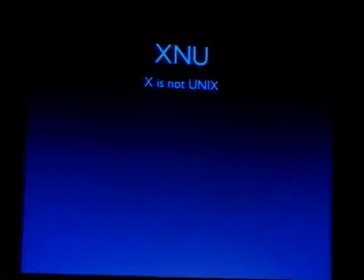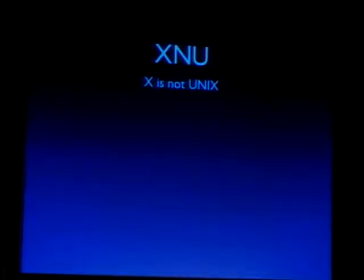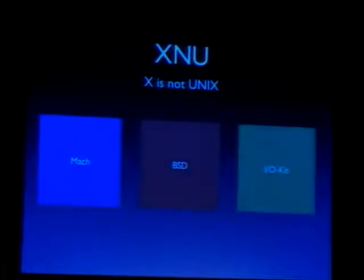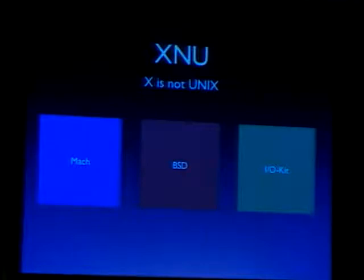Let's look at the architecture of Mac OS X, starting with the kernel, which is called XNU — X is Not Unix. So much for Mac OS X being Unix, but more on that later. The kernel consists of three major parts: Mach, BSD, and the IOKit. Mach was originally a research project at Carnegie Mellon University (CMU), started in 1985.